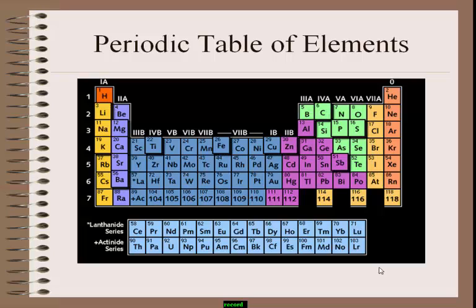The elements with increasing atomic number are present in the periodic table. Observe carefully: atomic number one is hydrogen, because it contains only one electron. Similarly, helium contains two electrons. Then lithium, beryllium, boron, carbon, and so on.